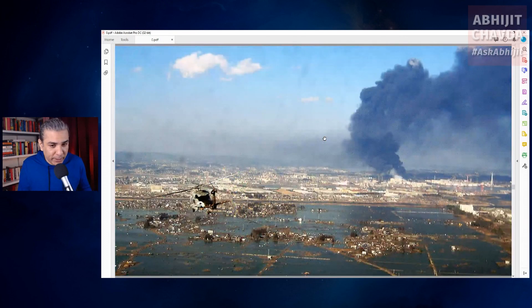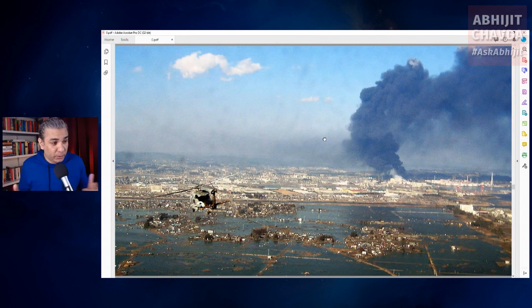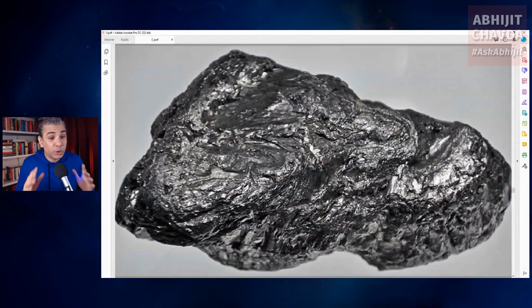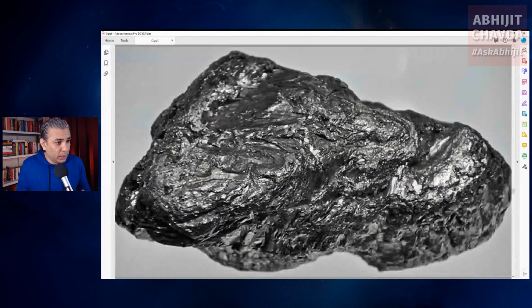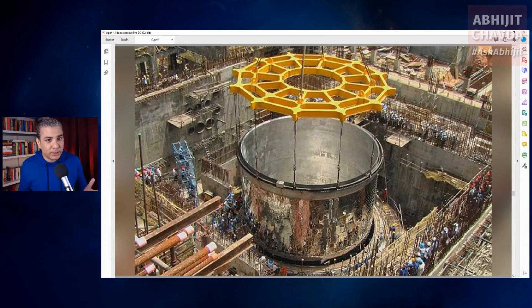This is what happened in Chernobyl, in Fukushima, and Three Mile Island. Apart from uranium, there is another element called thorium that can also be used in nuclear reactors. India has a reasonably advanced thorium reactor program.